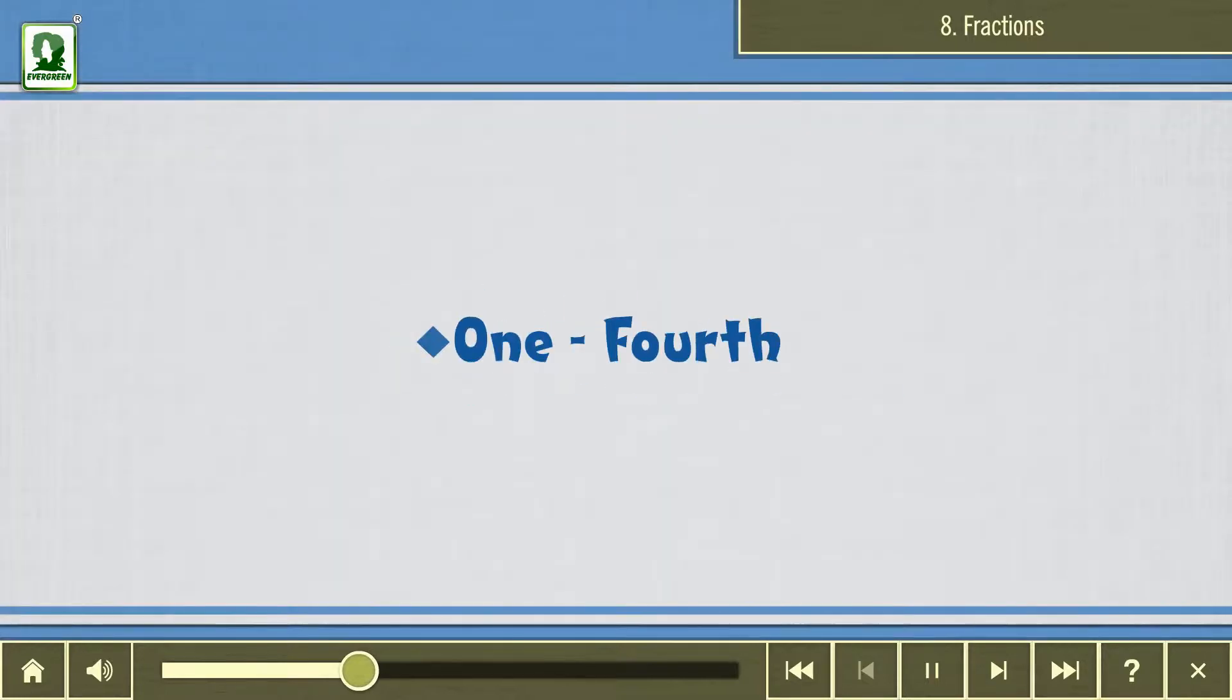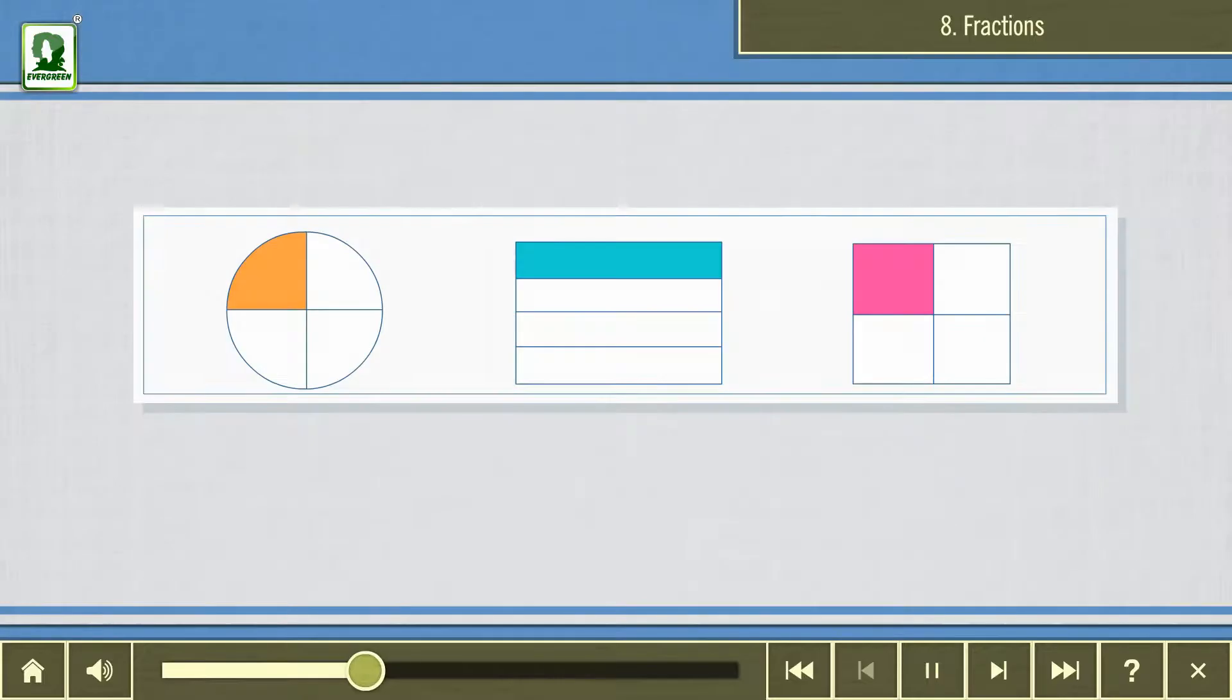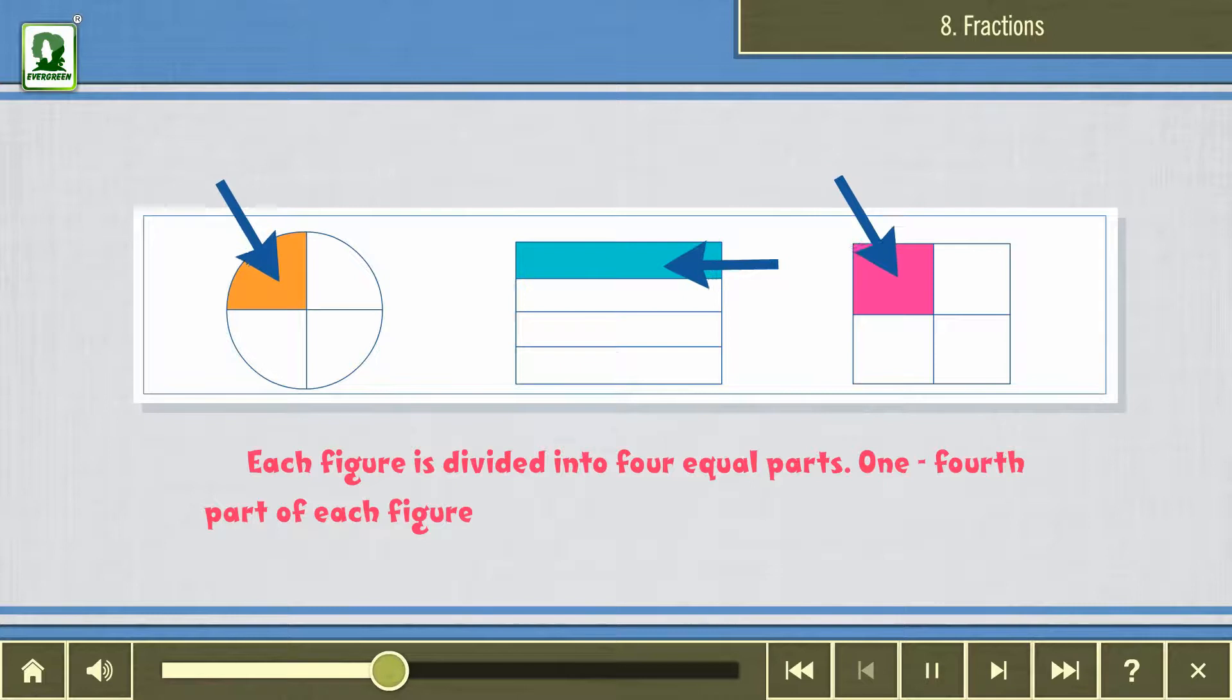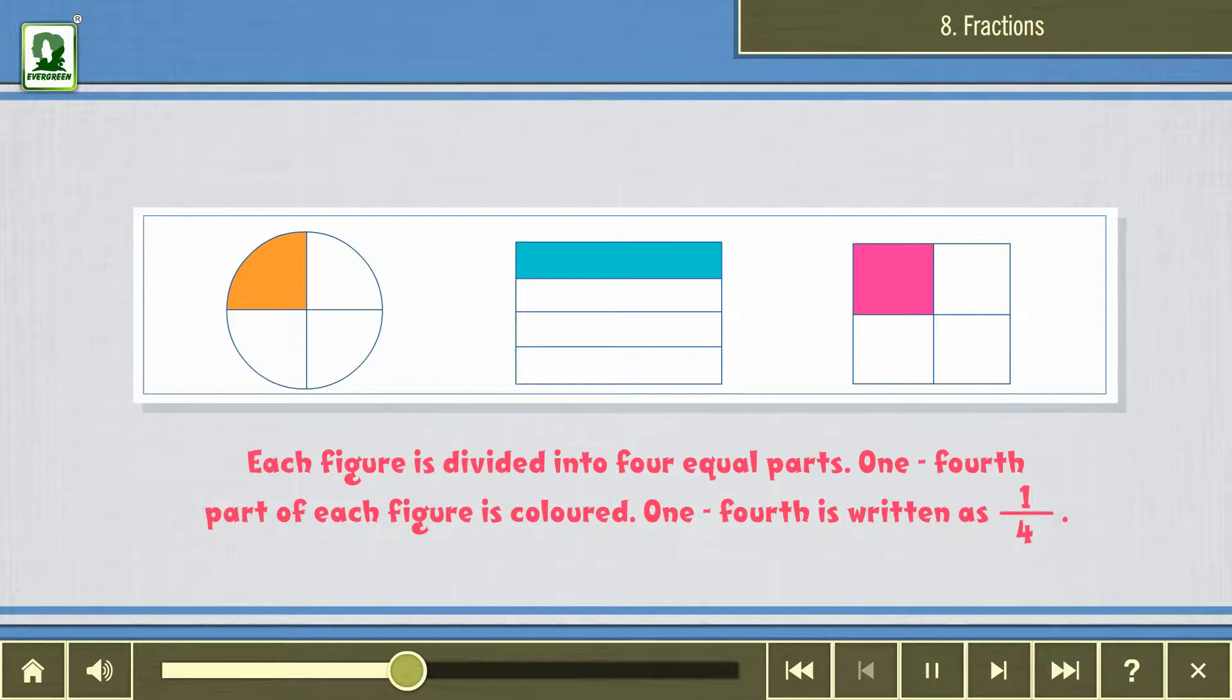One fourth. Each figure is divided into four equal parts. One fourth part of each figure is colored. One fourth is written as one upon four.